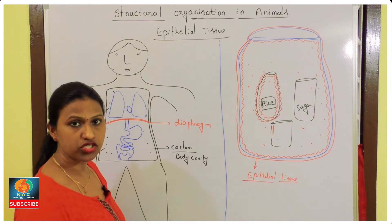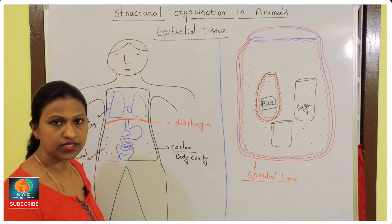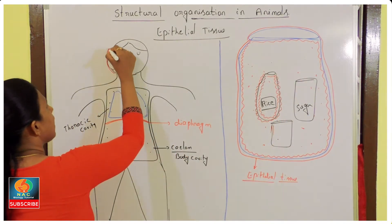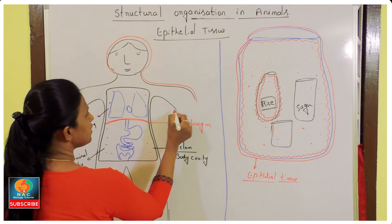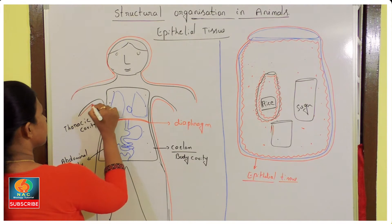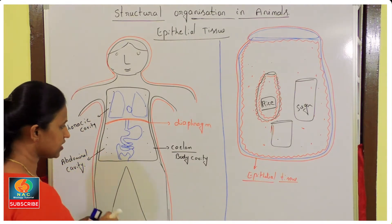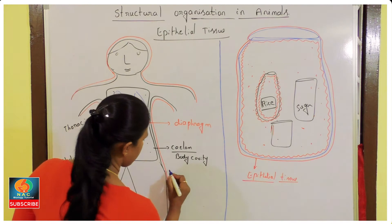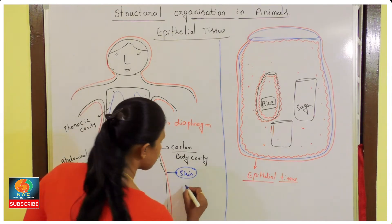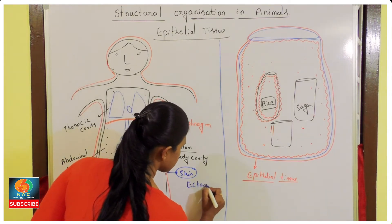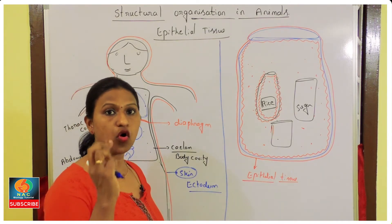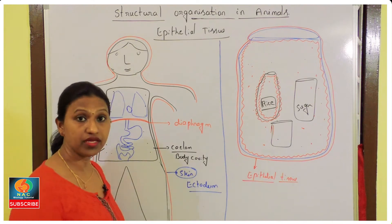Let us compare the same logic for the human body. The epithelial tissue covers outside, and our body is covered by epithelial tissue externally. What is that epithelial tissue which covers externally? This is nothing but our skin. Skin is the epithelial tissue, and it is derived from the ectoderm.